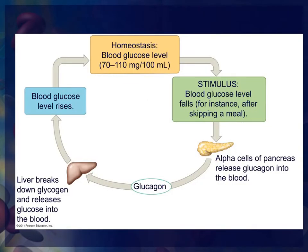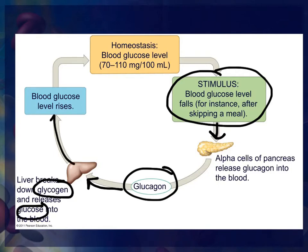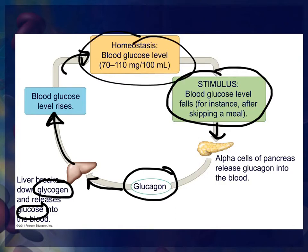When you haven't eaten for a while or skip a meal, the levels of glucose in the blood go down. That triggers the pancreas to release glucagon, which signals the liver to convert glycogen back into glucose and release it into the blood so it can be used — increasing glucose levels back to homeostasis. The normal blood glucose level is between 70 to 110 milligrams per 100 milliliters of blood. Anything above 200 to 300 could indicate diabetes, one disease affected by blood glucose.